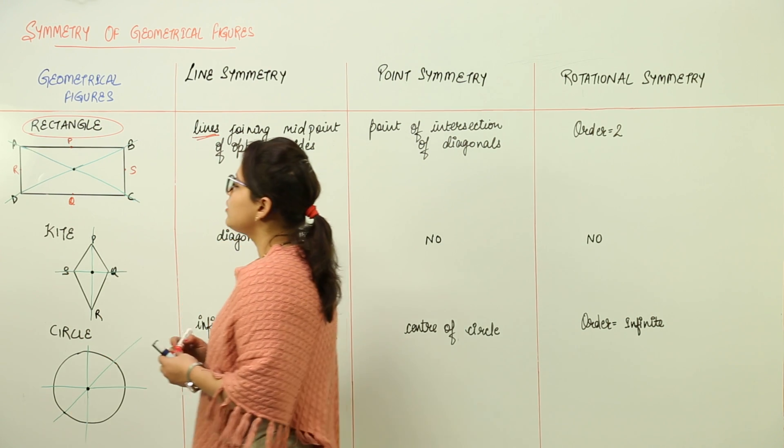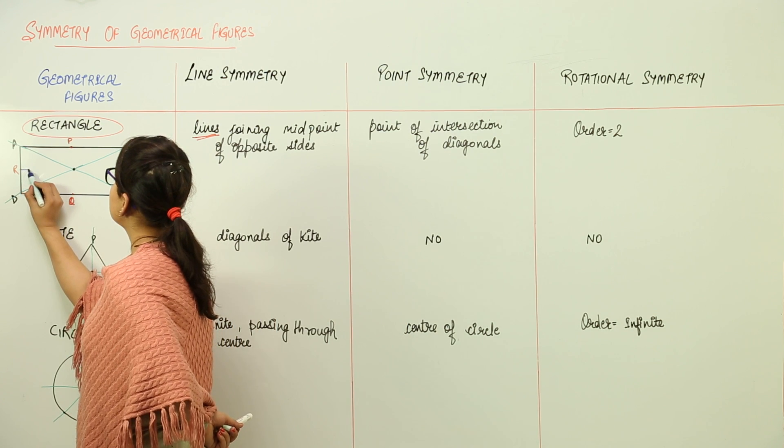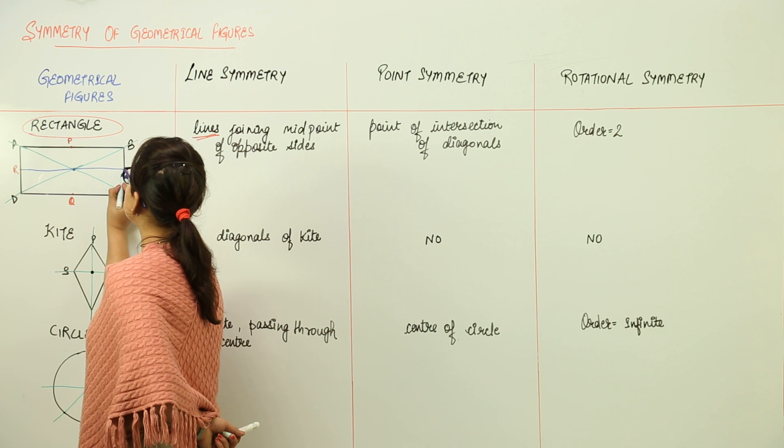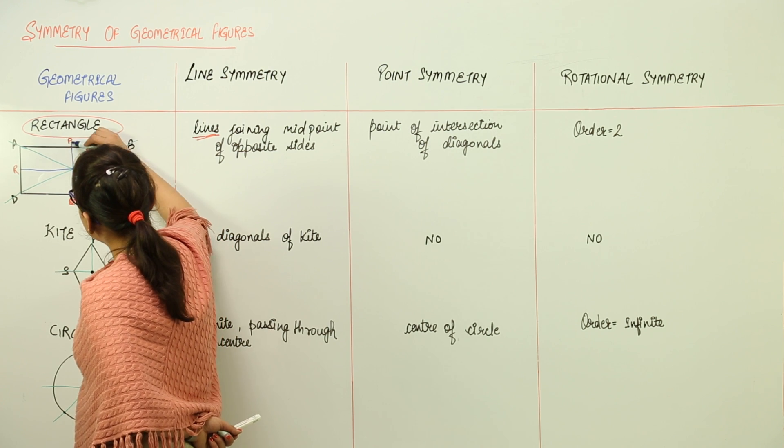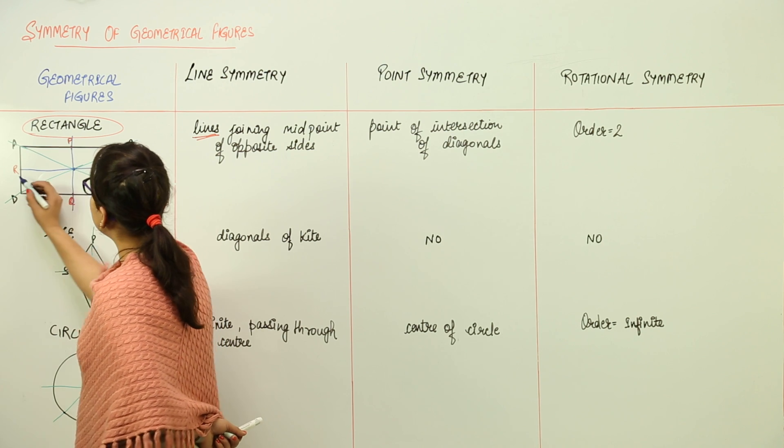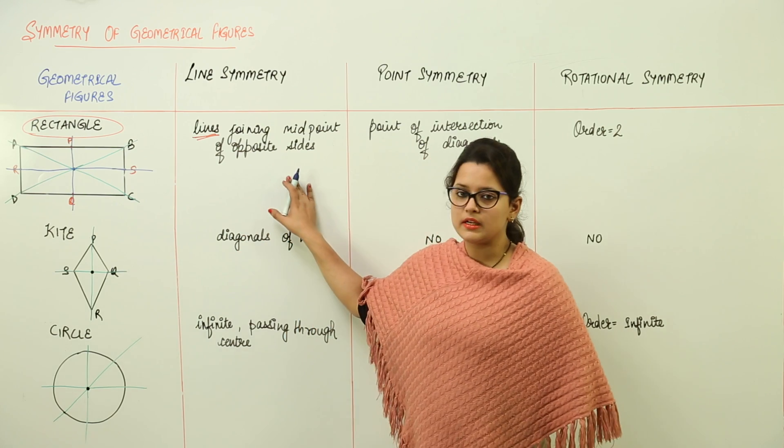So if you want to make the line symmetry, that will be the line joining the midpoints of the opposite sides, that is RS and PQ. So RS line and line PQ represent the line symmetry, the two lines of symmetry for rectangle.